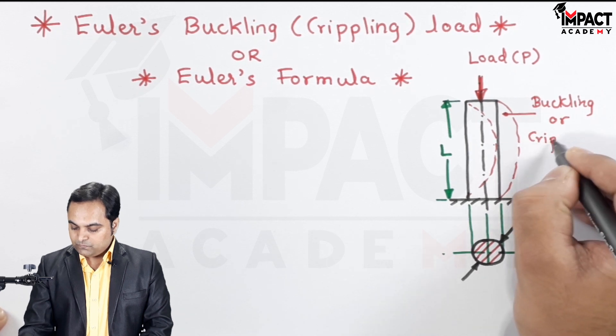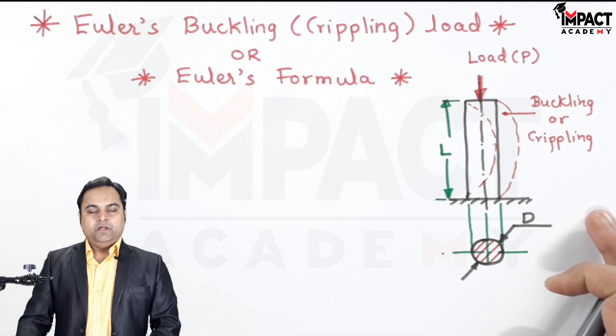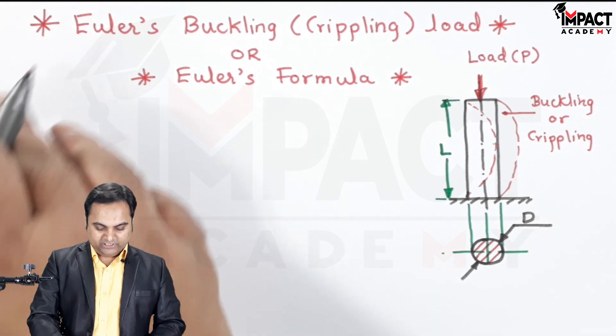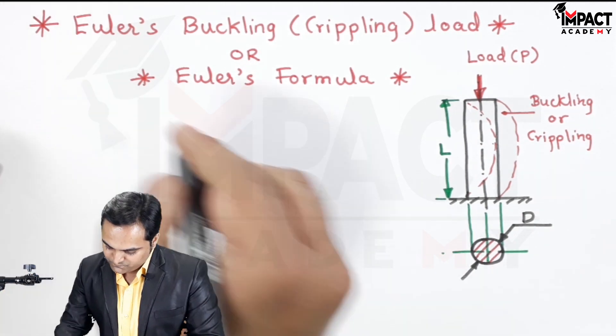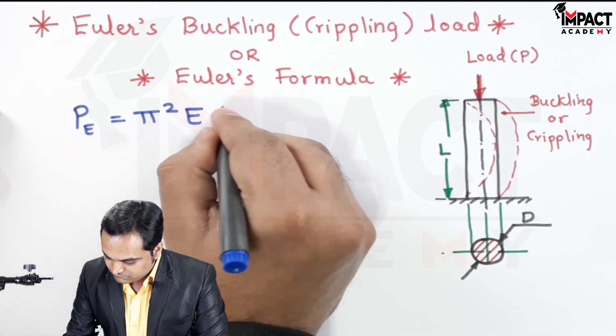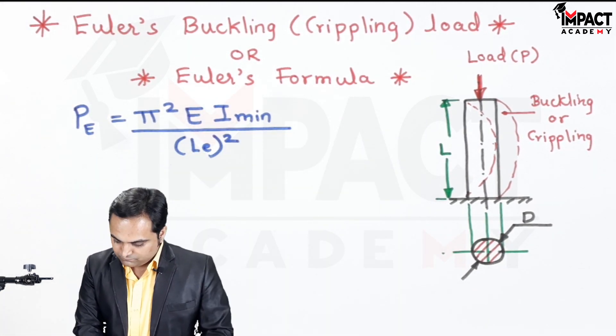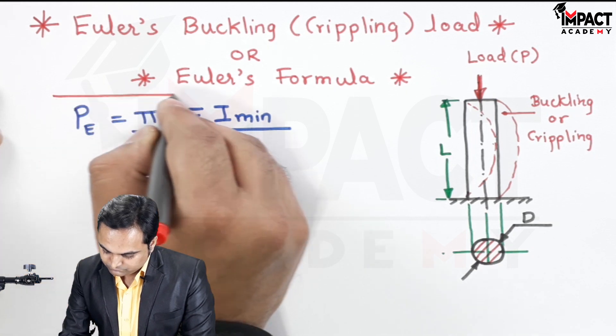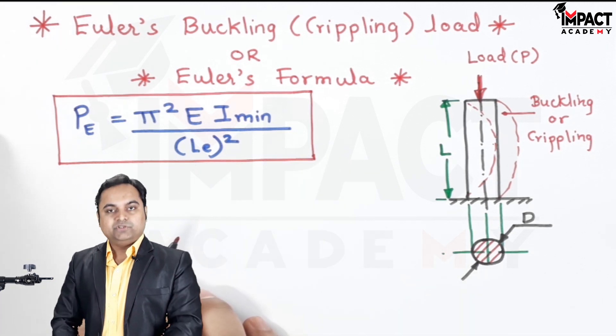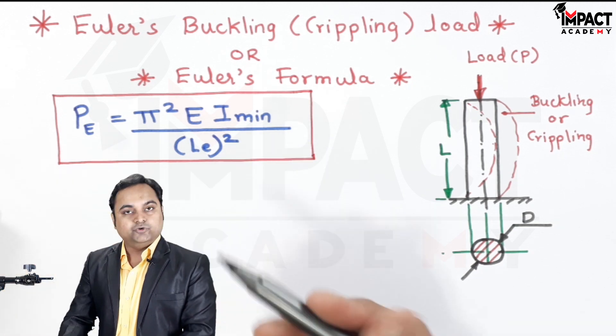And this condition should not be there in a column. To find this buckling or crippling load, we use the Euler's formula which is given by... So this is the Euler's formula. I'll explain all the terms which are used over here.